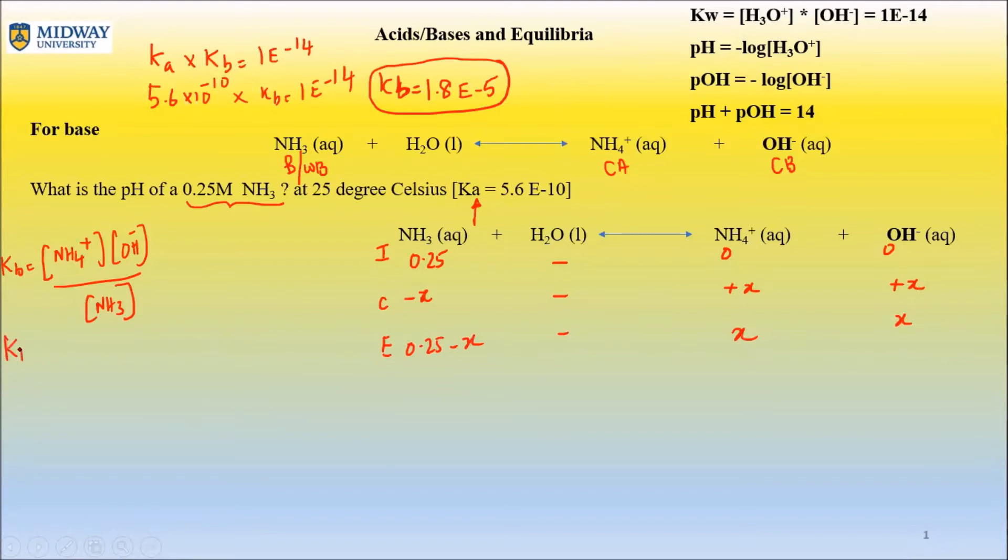So we put it in this KB expression which is x times x over 0.25 minus x equals 1.8×10^-5. As with the previous case, if your value is negative 5, negative 6, negative 7, that is it becomes more negative, we can make the assumption that this is small. So x squared over 0.25, it just simplifies from not using quadratic equation. Standardized exams typically don't prefer you because they don't allow you to use a scientific calculator, and I don't think most of us can do a quadratic equation in our brain.